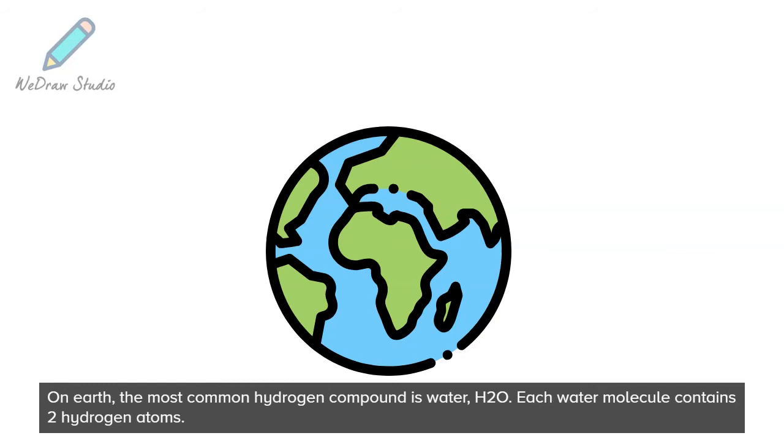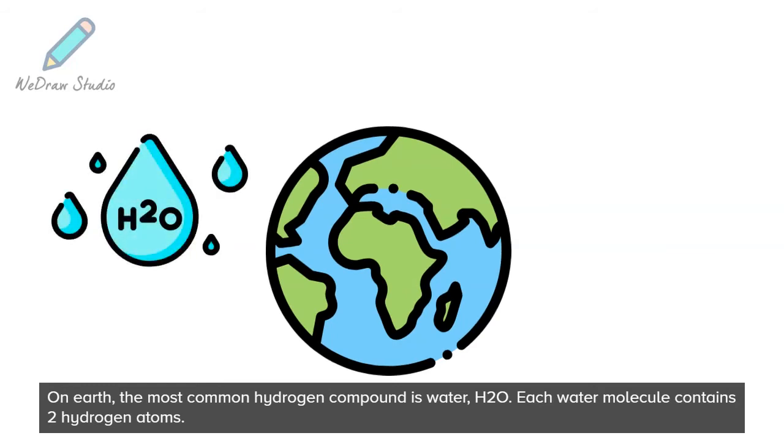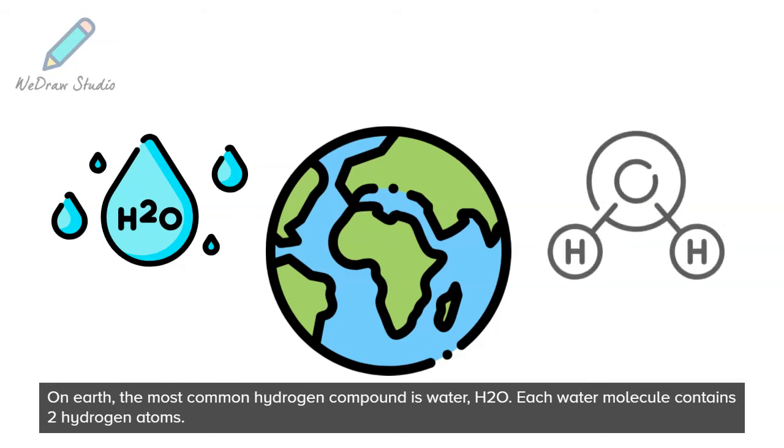On earth, the most common hydrogen compound is water, H2O. Each water molecule contains two hydrogen atoms.